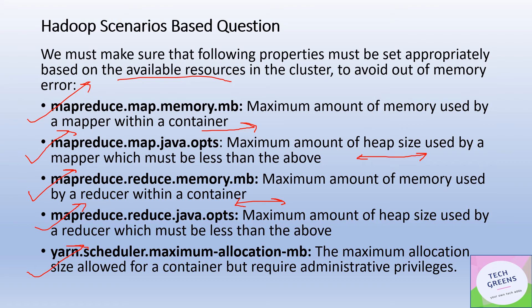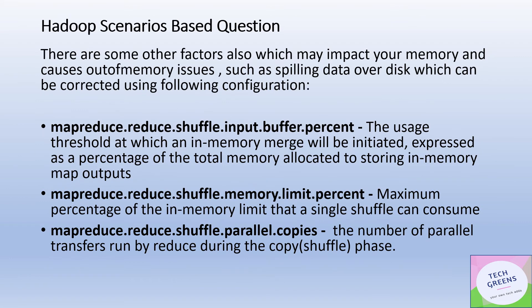Apart from memory allocation properties, there are other factors that impact memory utilization and cause out-of-memory issues — such as spilling data to disk. This happens when data being processed cannot be contained within memory and spills over to disk, causing high I/O and contributing to out-of-memory issues. This can be corrected using specific configurations.